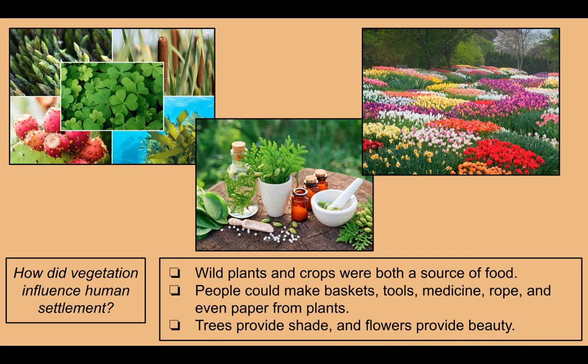How did vegetation influence human settlement? Wild plants and crops are both a source of food. People could make baskets, tools, medicine, rope, and even paper from plants. Trees provide shade and flowers provide beauty. On the left are several examples of edible wild plants — one looks like asparagus. The center picture shows how some plants can be used to create medicine. And on the right is some kind of flower grove.